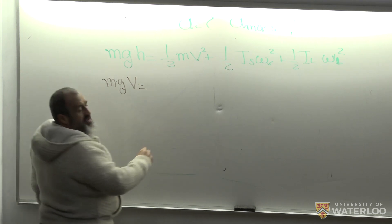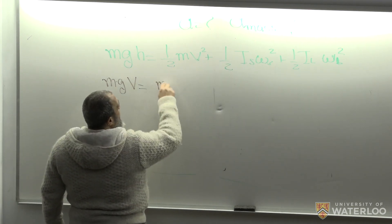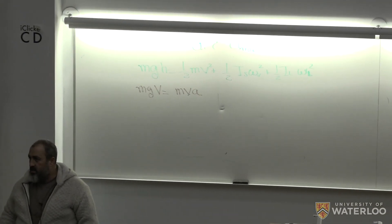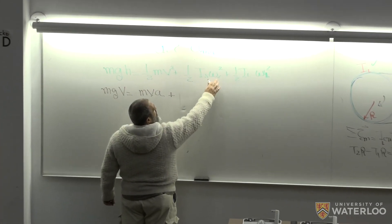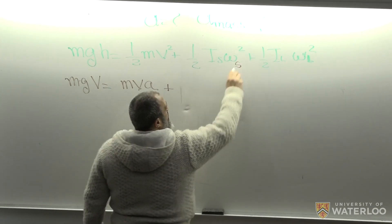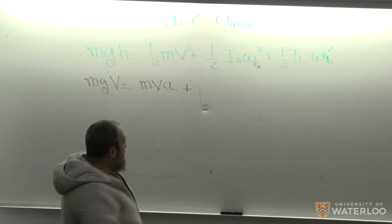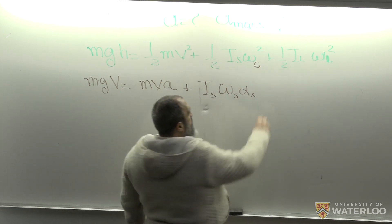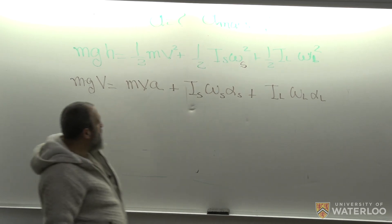Taking the derivative: MgV equals MVA plus I_small times omega_small times alpha_small plus I_large times omega_large times alpha_large. The halves cancel because the derivative of omega squared is 2·omega·alpha. Now the next step in the energy approach is to cancel out V by substituting relationships. Omega_small equals V over R1, so the I_small term becomes I_small times (V over R1) times (A over R1).